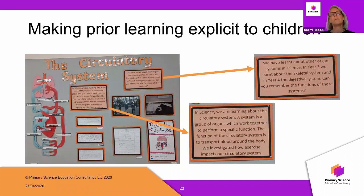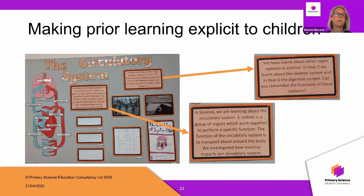What's also coming through strongly from Ofsted inspections is that it's not only important that the teacher knows about progression — children are starting to be much more aware of it as well. Here's one example: a year six class studying the circulatory system put up a display showing what they'd done in the past about digestive systems, and also what they'd be learning during this topic. That's just one way a school has chosen to share prior learning with pupils — you may have other ways you can share on the chat.